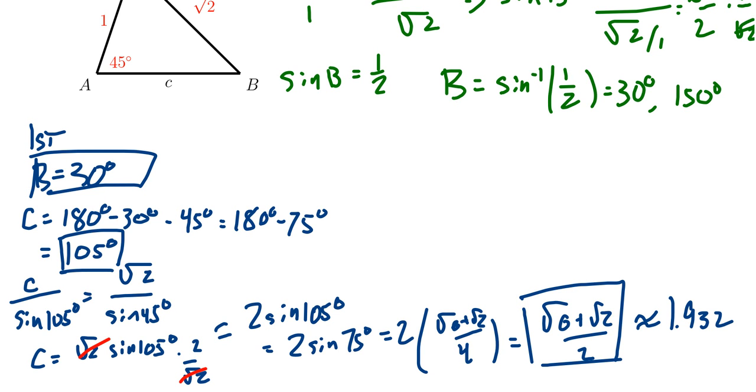What about the second triangle? There is a second possibility. What happens if B equals 150 degrees? That would then suggest that C equals 180 degrees minus B, which is 150, minus A, which is 45. That actually ends up with negative 15 degrees for C, which is not a possibility. So we see that the second triangle is not possible.